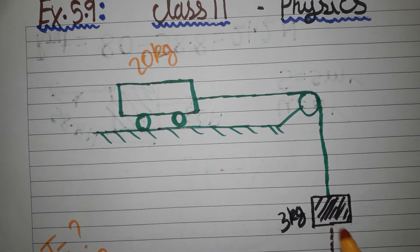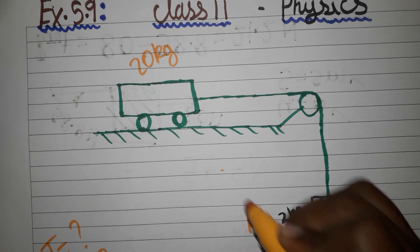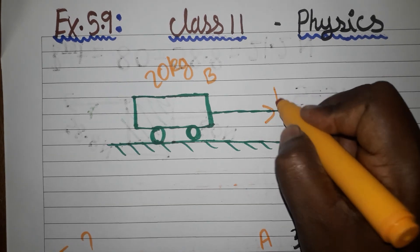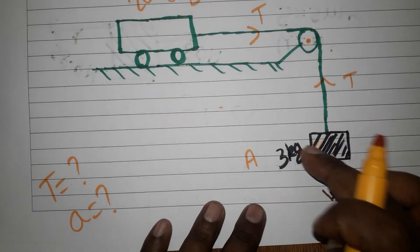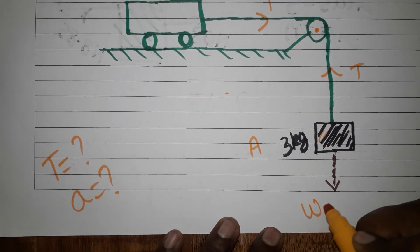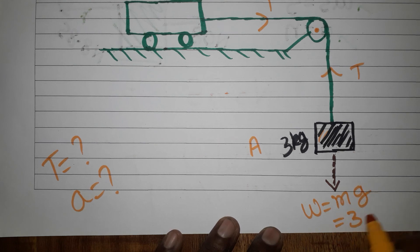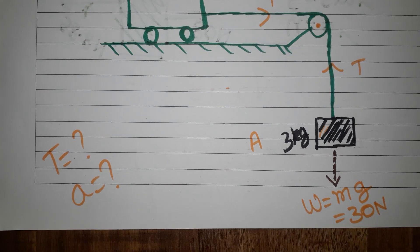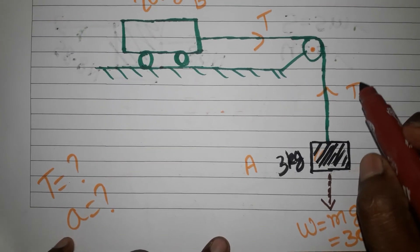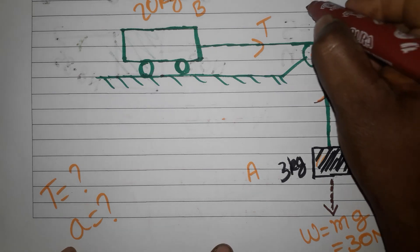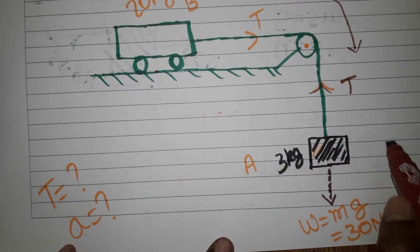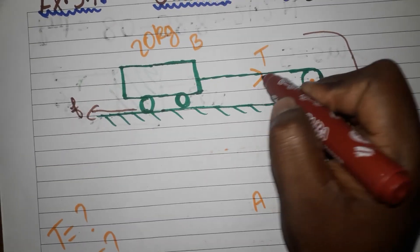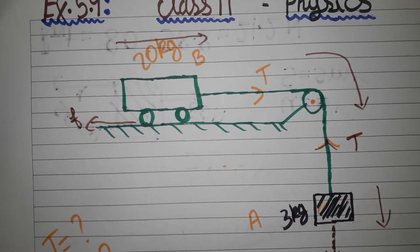First we will see which direction the system is moving. So 3 kg I am taking as A, and 20 kg I am taking as B. Here a pulley system is there — the pulley system is only changing the tension direction, that is it. So for 3 kg, weight is equal to mass into gravity, which is 30 N acting downwards. Upwards is the tension force T. The full system is moving this side, so tension will be this side and friction force will act that side on the trolley.